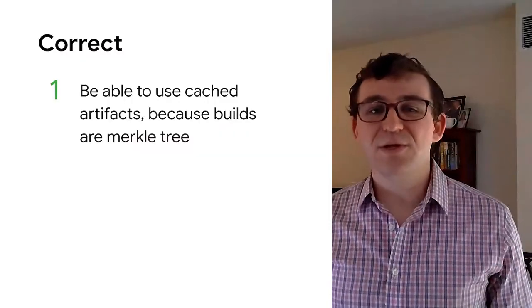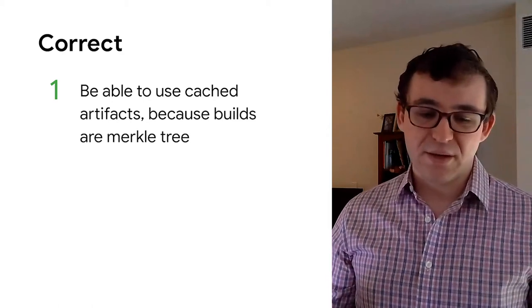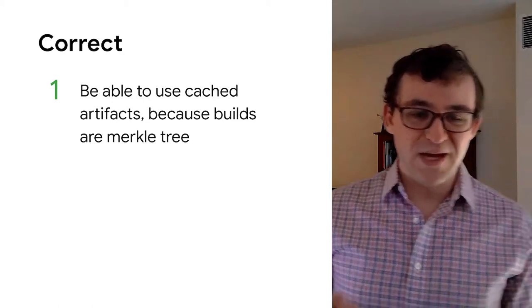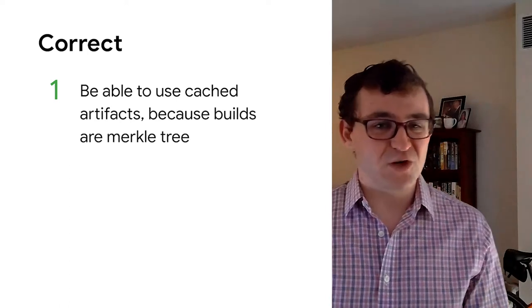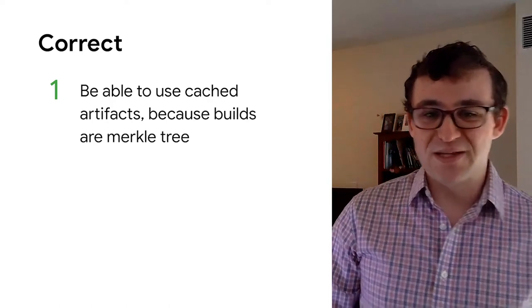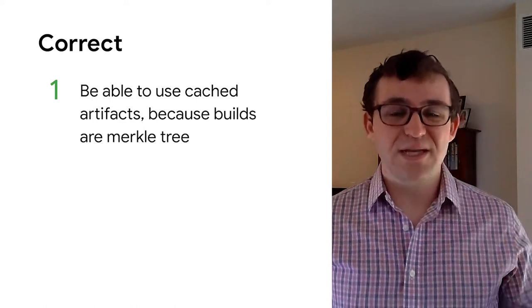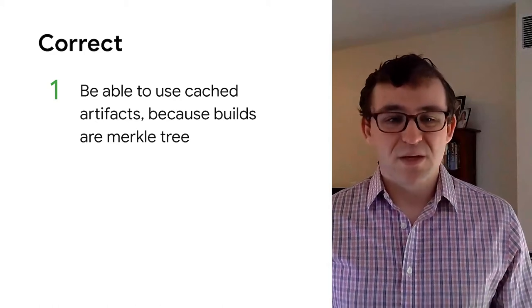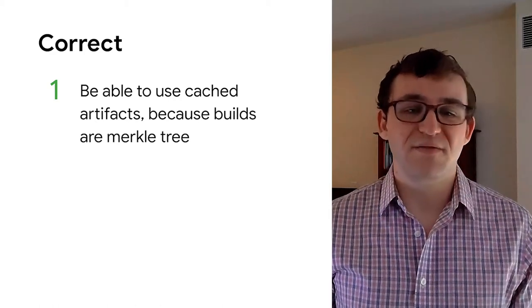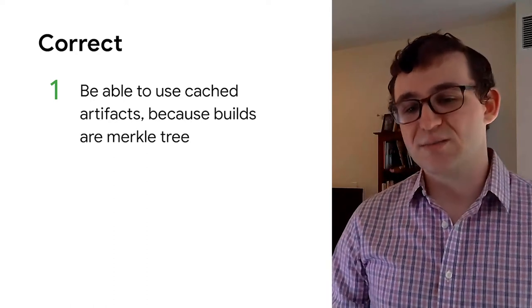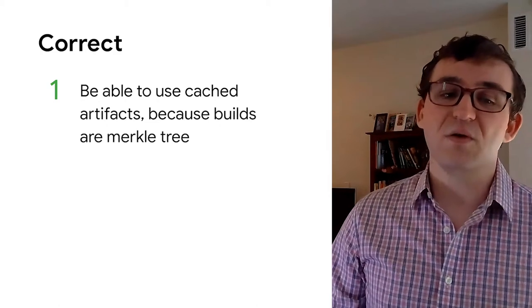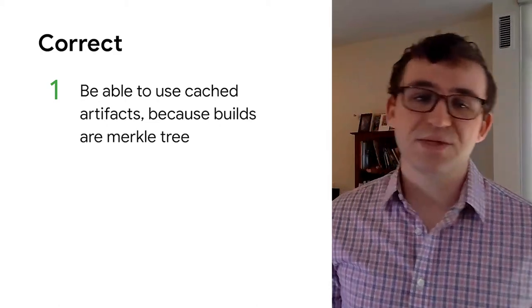So now we're going to motivate why we care about deterministic — aka correct — builds, and it's because of this caching. To be able to use cached artifacts — and here's a fancy computer science term warning — builds in Bazel are Merkle trees, which is a fancy way of saying it's checksums all the way down. So to be able to use cached artifacts, all the inputs in that Merkle tree need to be the same. Bazel's caching is entirely dependent upon file checksums — SHA-256 checksums to be precise — rather than the timestamps that a lot of local-only build systems, such as Make, use.